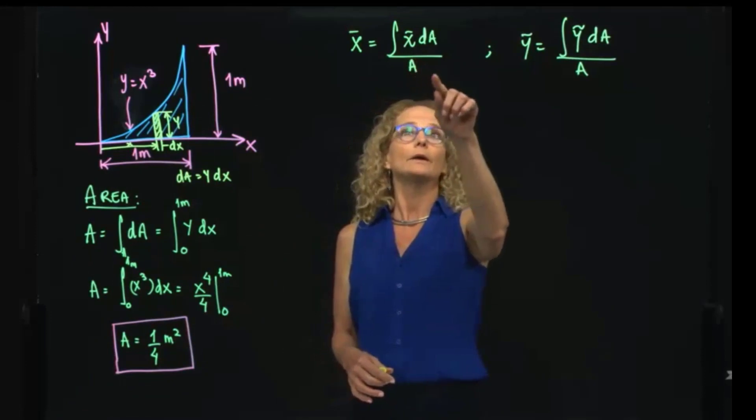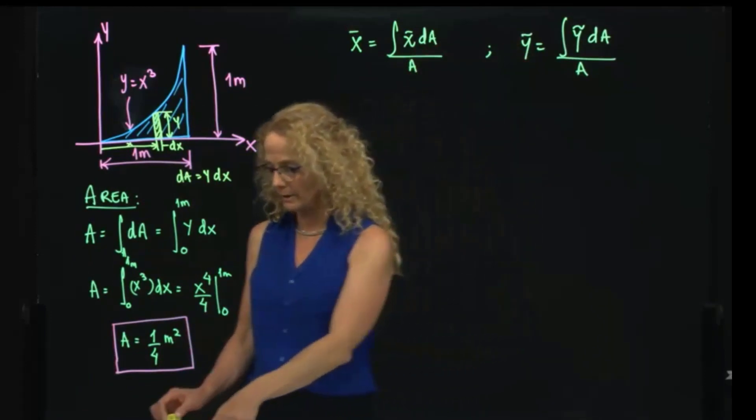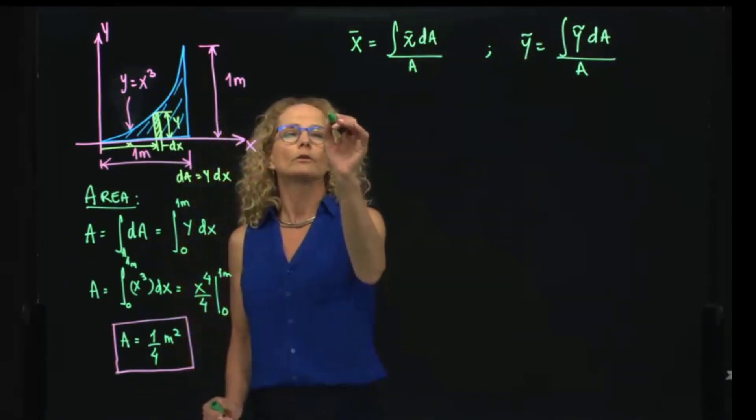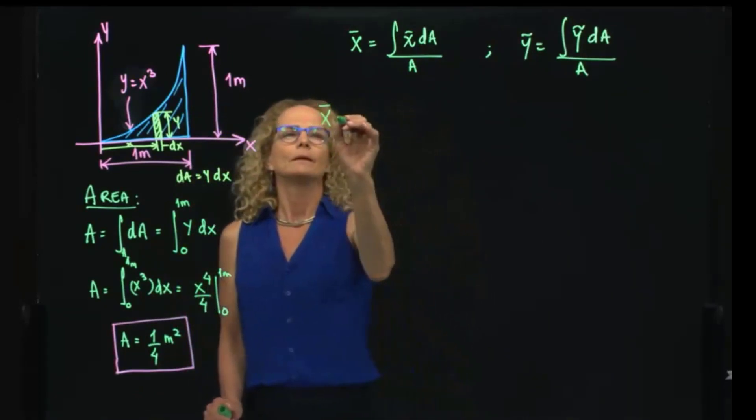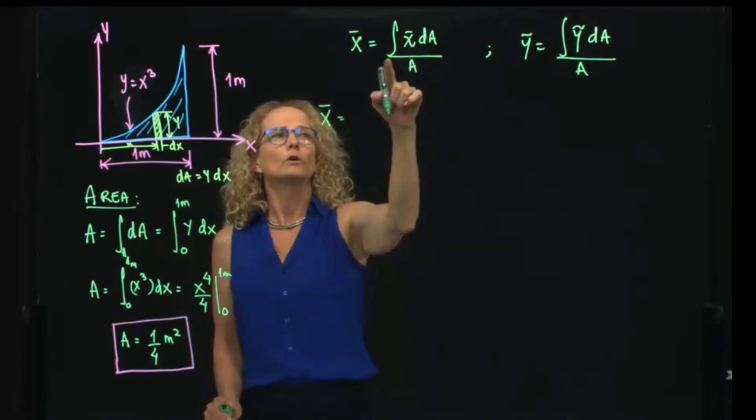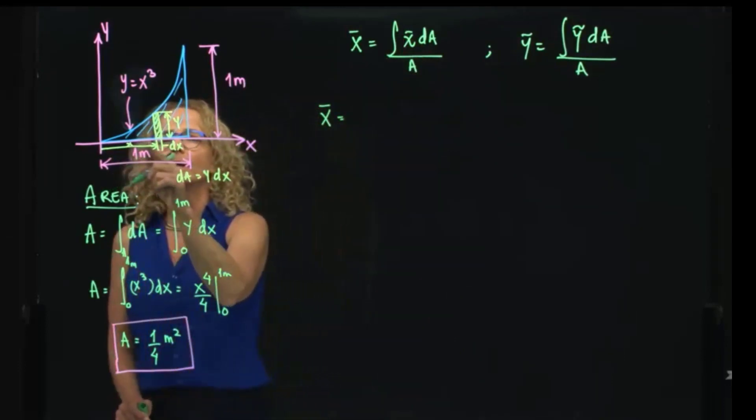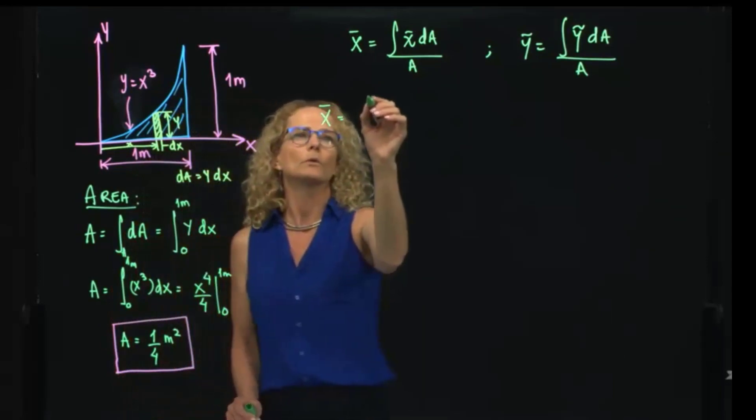So once we have found the area, we can do the integral in the numerator. So let's do the centroid for x. Here, we have the centroid of my differential of area. All the area is located at my variable x. Therefore, it will be x.